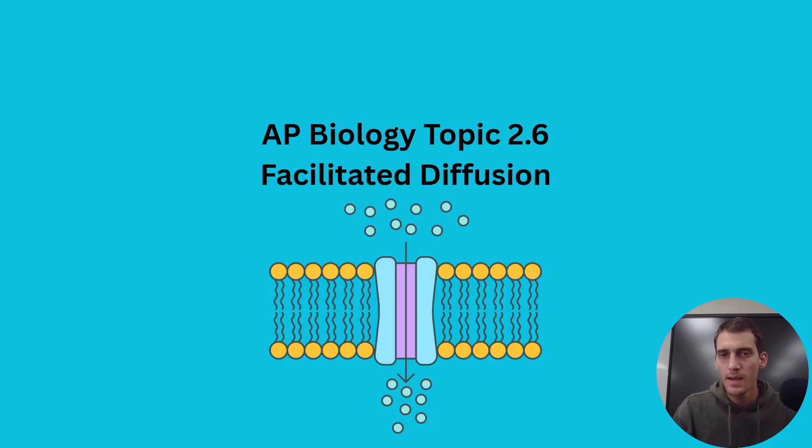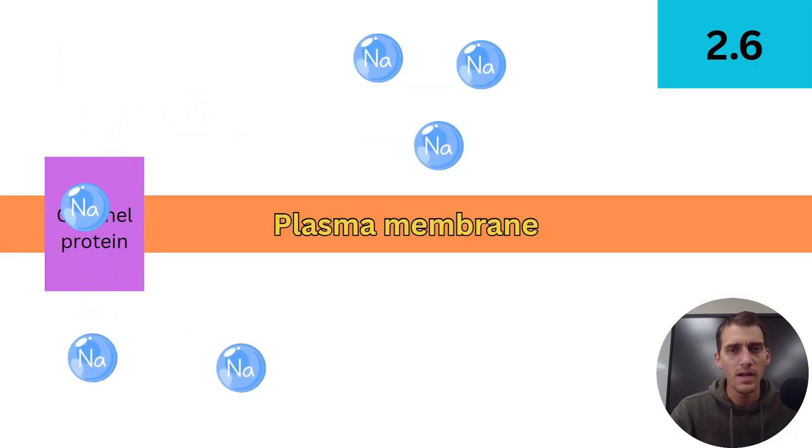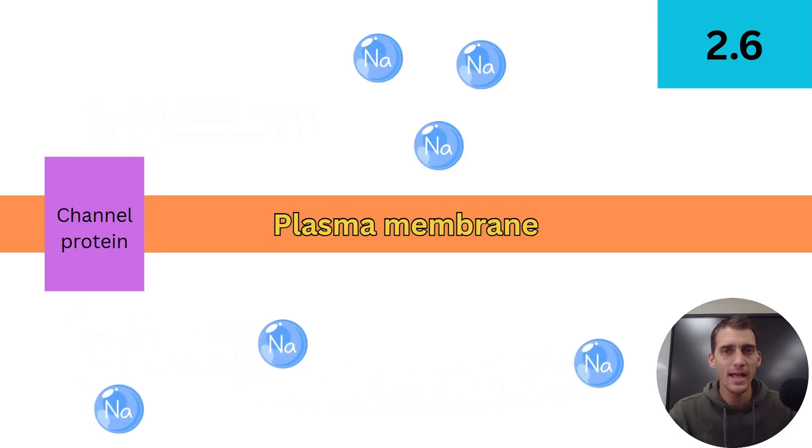Facilitated diffusion means that it's making it easier for certain things to diffuse. What could that be in the context of? I showed you this animation in your last video.